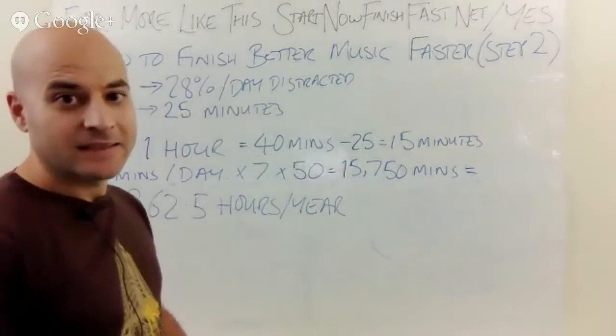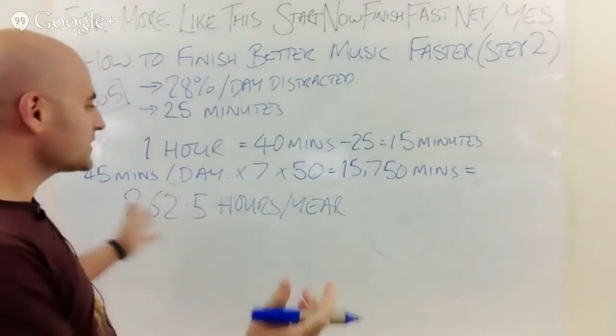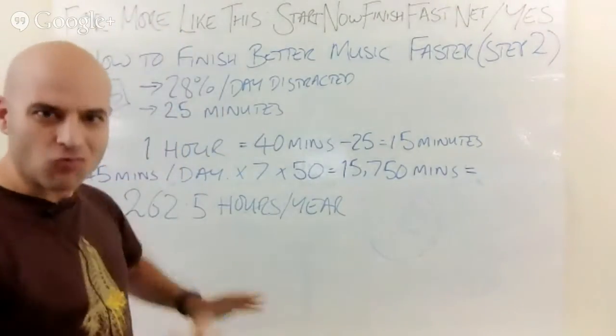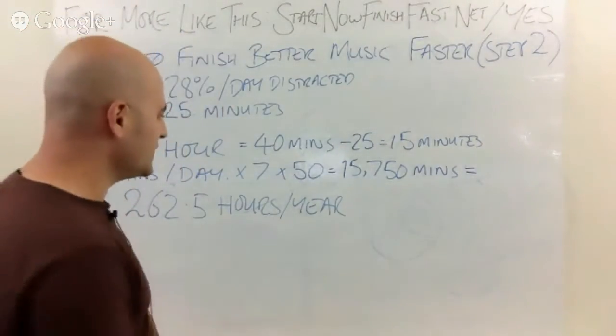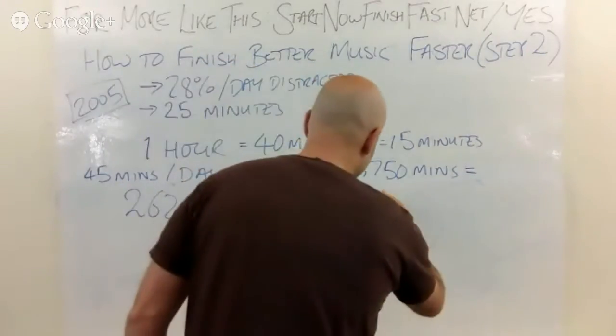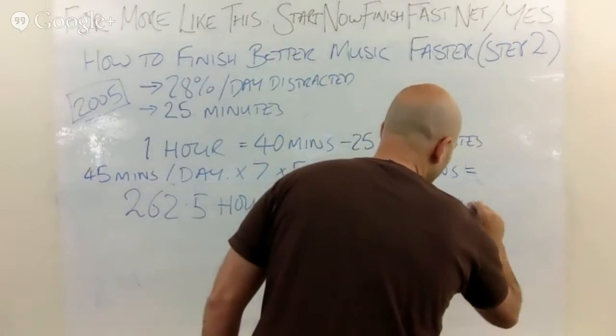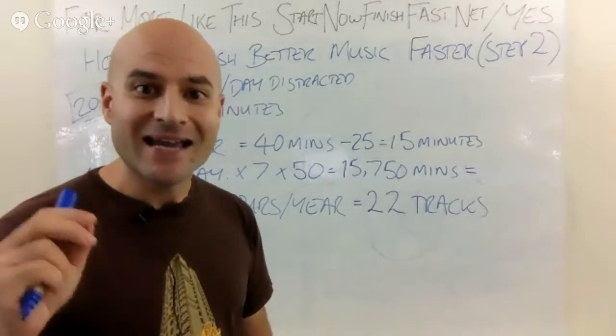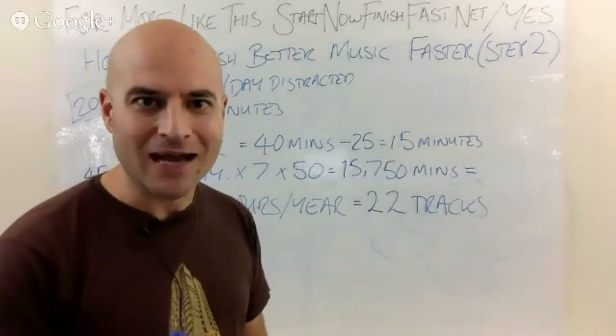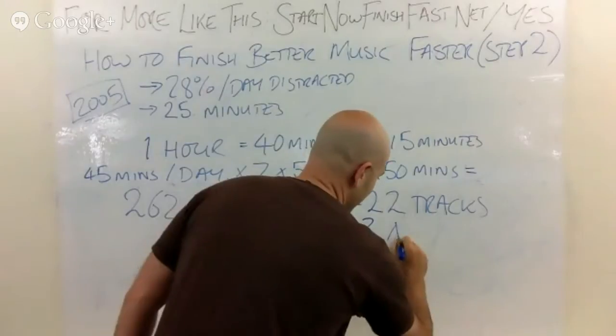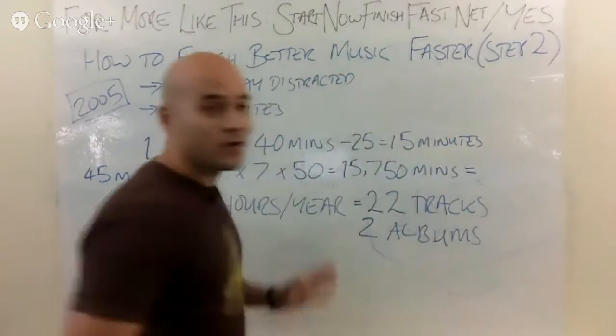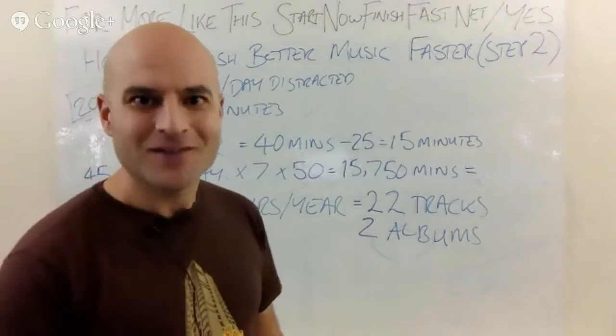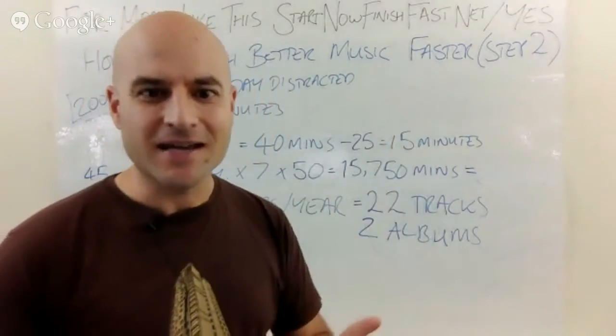What does that mean in terms of what you could finish? Let's say on average a track, an electronic dance club track, takes you around 12 hours of focused hours to finish. That would mean you would finish nearly 22 tracks more than you do now. That's nearly two albums worth of music. What could you do with two albums? How much better could you get at making music with two albums? How different could your life be if you made two albums? This is on one hour a day.